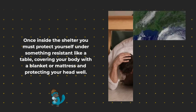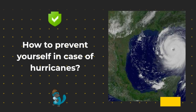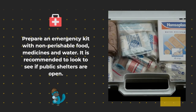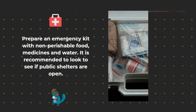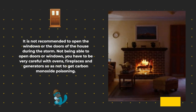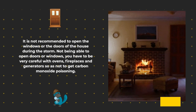How to protect yourself in case of a hurricane: Prepare an emergency kit with non-perishable food, medicines, and water. It is recommended to check if public shelters are open. It is not recommended to open the windows or doors of the house during the storm. Since doors and windows should remain closed, be very careful with ovens, fireplaces, and generators so as not to get carbon monoxide poisoning.